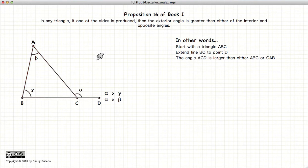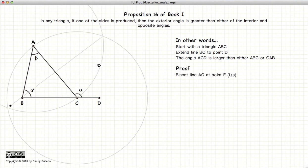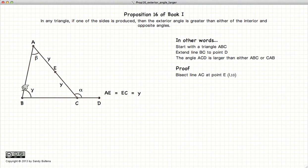So in an effort to prove this, the first thing we're going to do is bisect the line AC. We will now draw a line from B to the midpoint of AC, or point E.